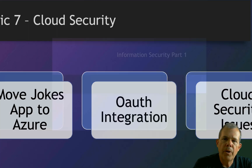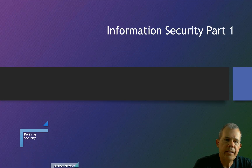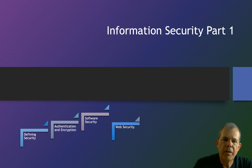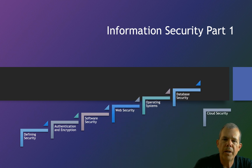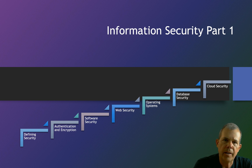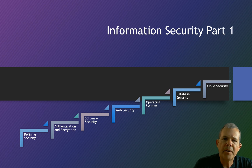Our information security class has these seven parts: defining security, authentication and encryption, software security, web security, operating systems, databases, and cloud security. This will be part one — it'll get you halfway there for what you need to know about being a professional software developer or IT professional in the real world. So let's get started with information security.